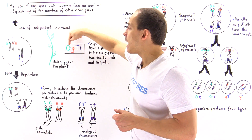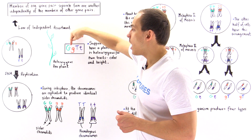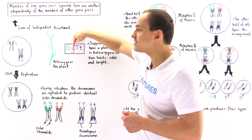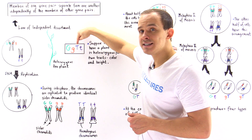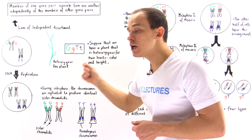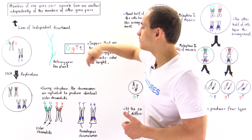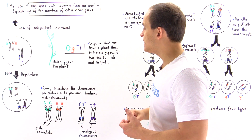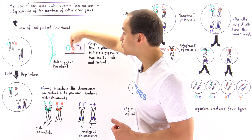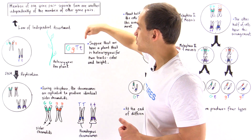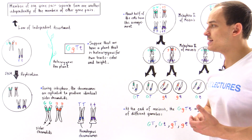We have the dominant gene for color, uppercase G, and the recessive lowercase g. We have uppercase T, the dominant gene for height, and the recessive lowercase t. These are color-coded in the diagram: green for uppercase G, yellow for lowercase g, blue for uppercase T, and purple for lowercase t.